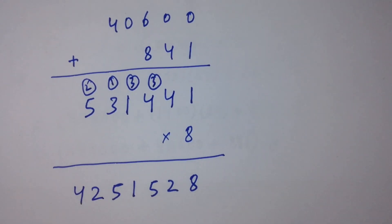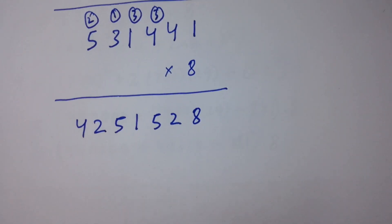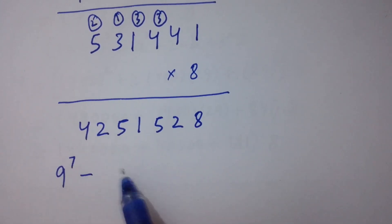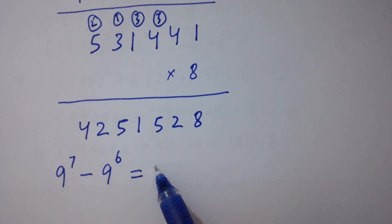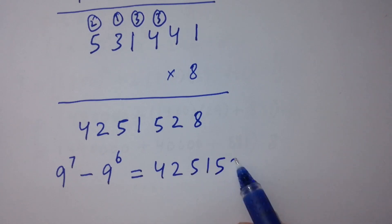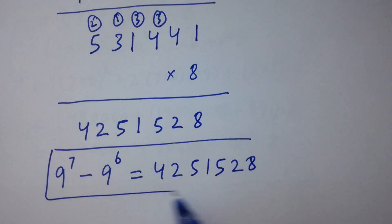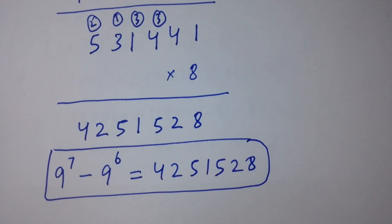So we can write here 9 to the power 7 minus 9 to the power 6 equal to 4,251,528. Finally, I solved this without any calculator.